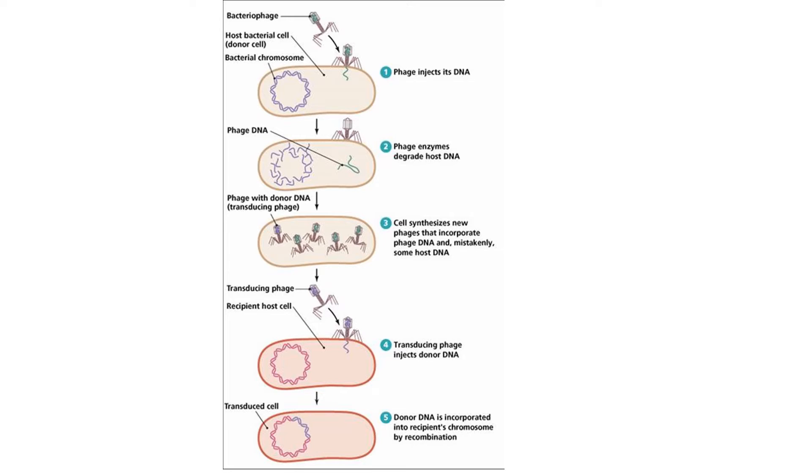Because of virus and host cell specificity, we need a bacteriophage capable of infecting both the donor and recipient bacterium. So we're going to do transduction between the same species of bacterium, from E. coli to E. coli, or Staphylococcus to Staphylococcus.